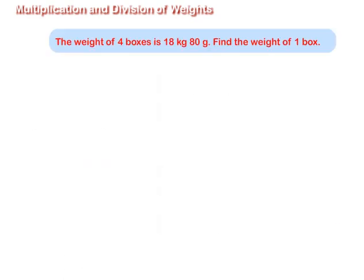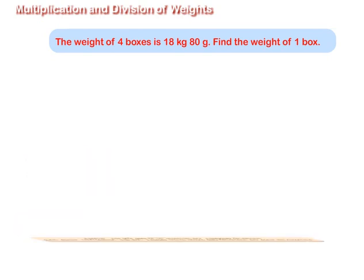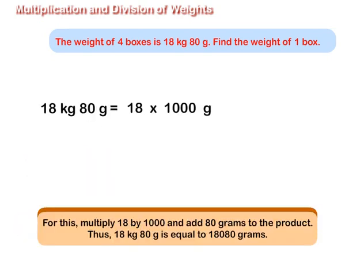The weight of 4 boxes is 18 kilograms 80 grams. Find the weight of 1 box. Convert 18 kilograms 80 grams into grams. For this, multiply 18 by 1000 and add 80 grams to the product.